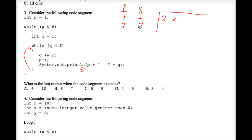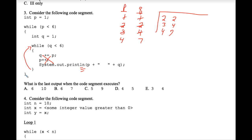We go back up to the top of the inner while loop. q is less than six, so we do this again — q plus equals p, q changes to four. p plus plus. We system.out.print p and q — three and four. We proceed back to the top of the while loop, q plus equals p — that's now seven. p plus plus is four, and we system.out.print four and seven.